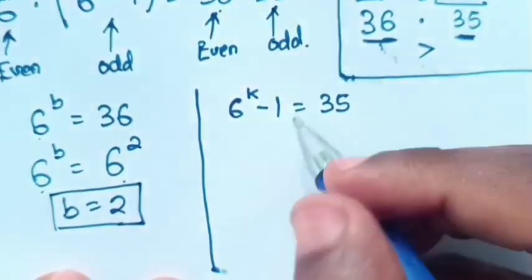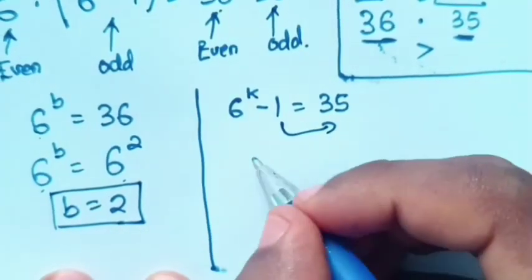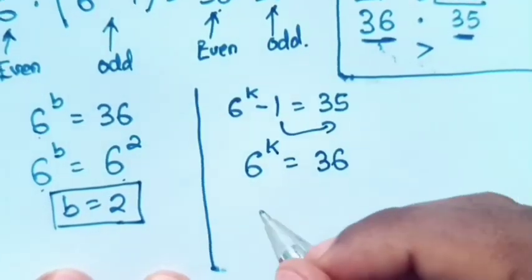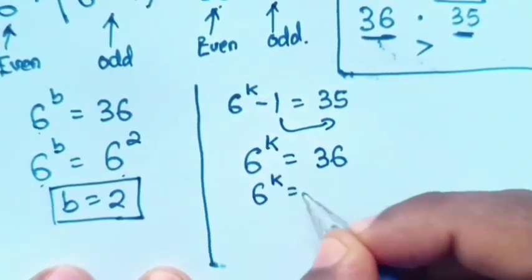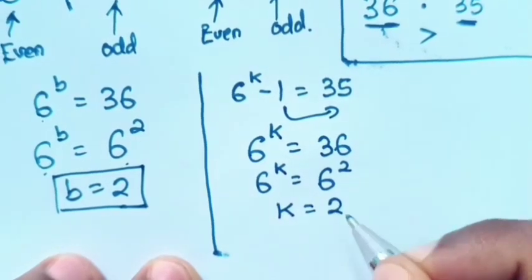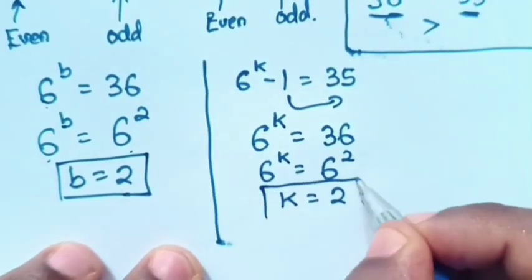In here, we take negative 1 to the right side. So, it will be 6 power k is equal to 35 plus 1 is 36. So, 6 power k is equal to 6 squared. Then, we compare powers. K is equal to 2.